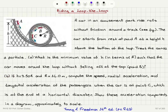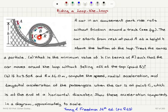Part B: If H is equal to 3.5R and R is 14 meters, compute the speed, radial acceleration, and tangential acceleration of the passengers when the car is at point C, which is at the end of a horizontal diameter. Show these acceleration components in a diagram approximately to scale.